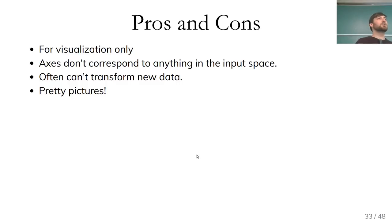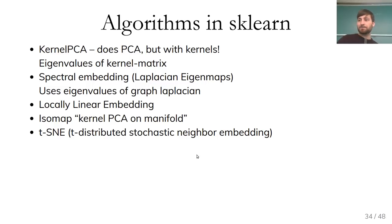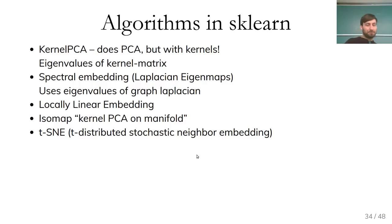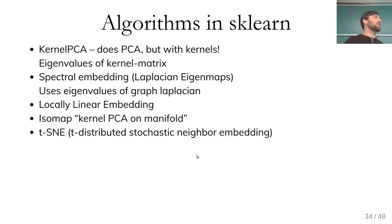There are a bunch of algorithms in scikit-learn: kernel PCA, spectral embedding, local linear embedding, isomap, and t-SNE. They're all motivated either by kernel methods, graph methods, or probabilistic methods. In practice, I think most people always use t-SNE. Because these algorithms are used mostly for visualization, the space we go to is usually two or three dimensions.